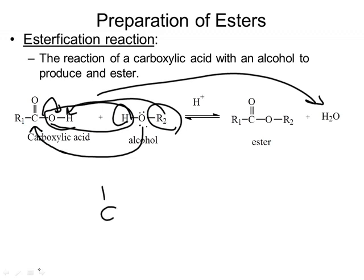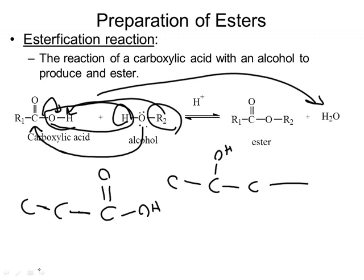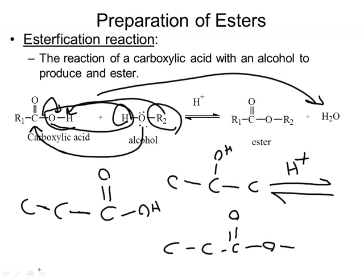For example, if I have a carboxylic acid that looks like this, and an alcohol that looks like this, then what I get when I react them — and I have to react it with an acid catalyst — is I get: all I'm going to do is take the carboxylic acid that I have, stop with the oxygen, and then hook the carbon.